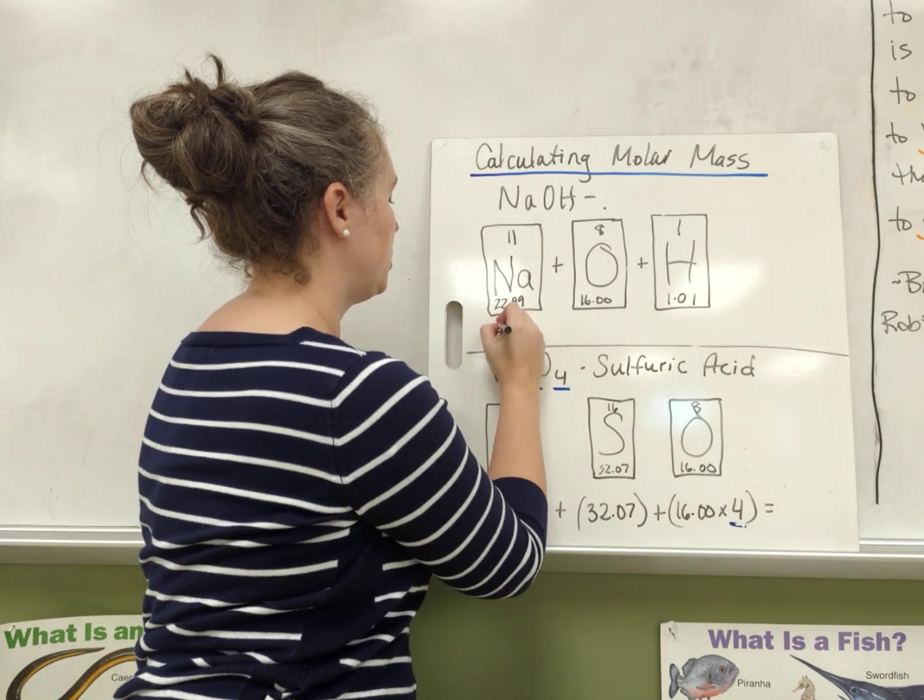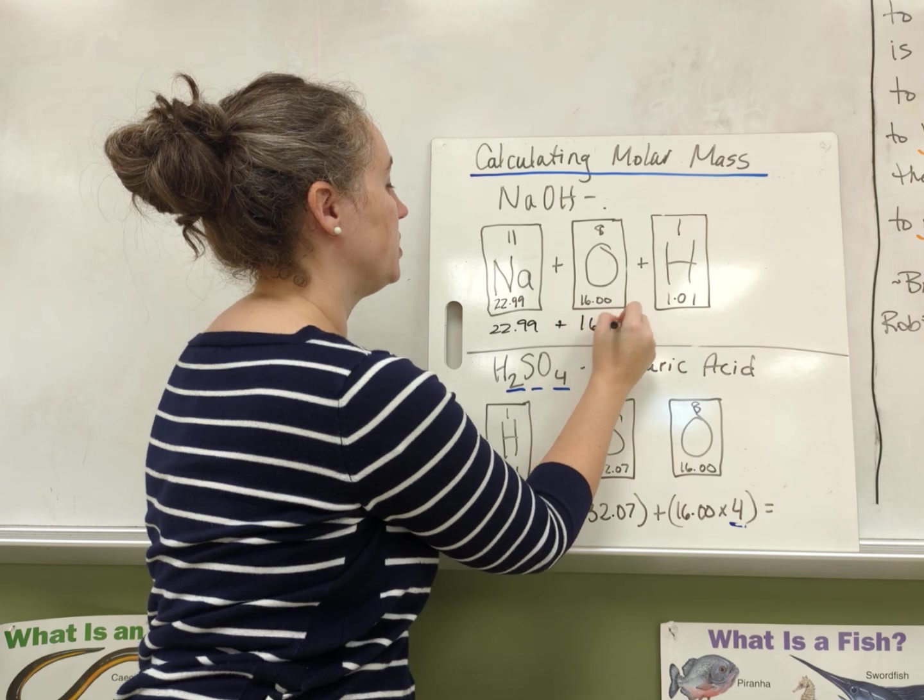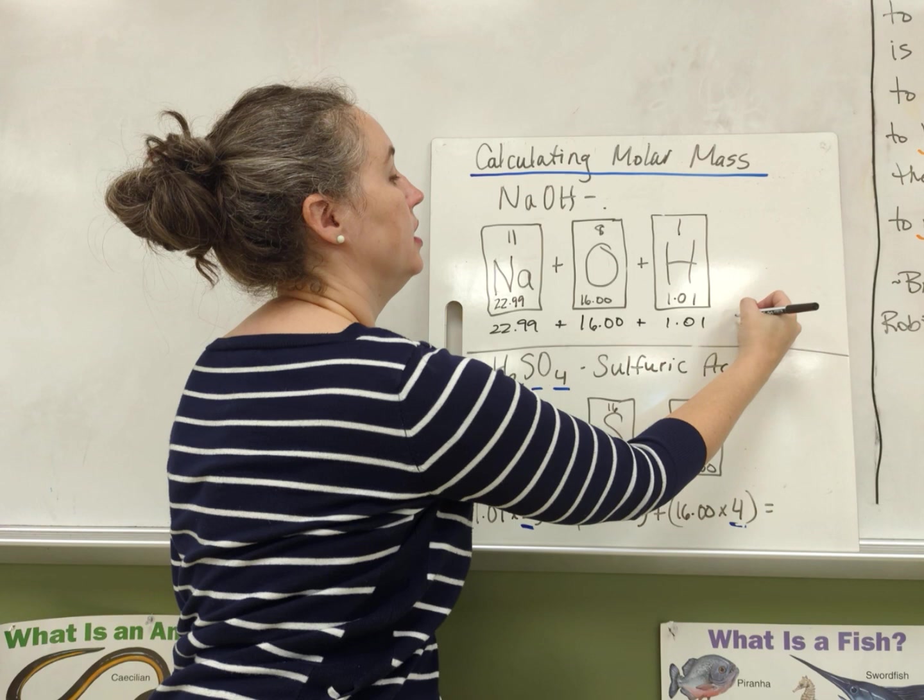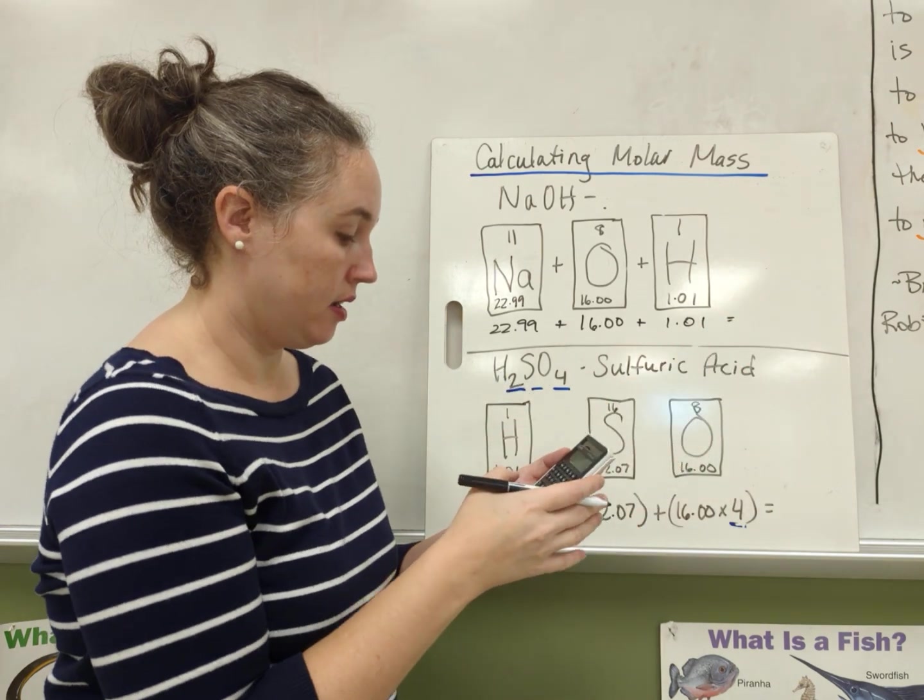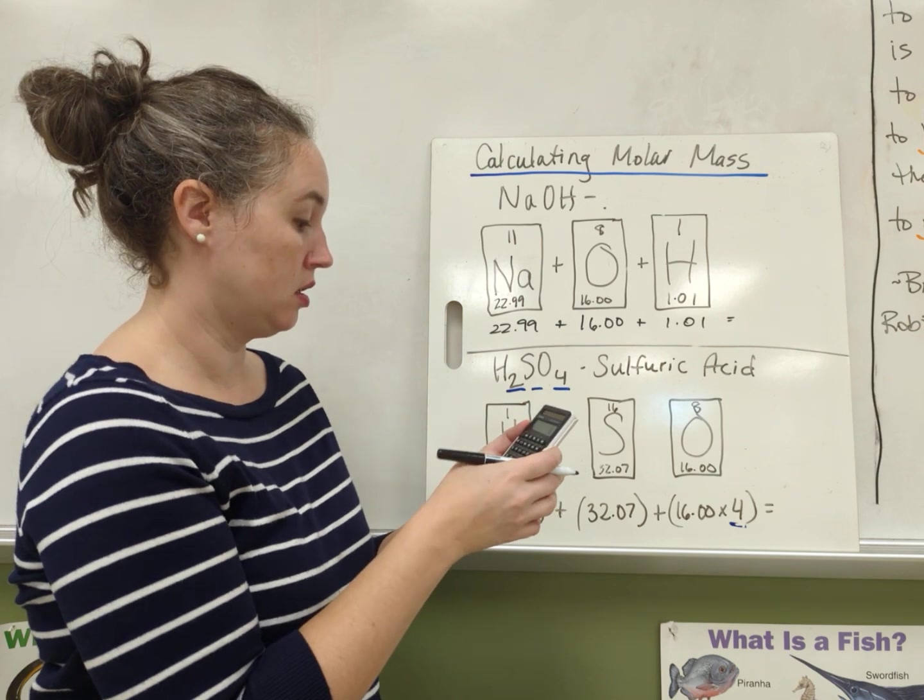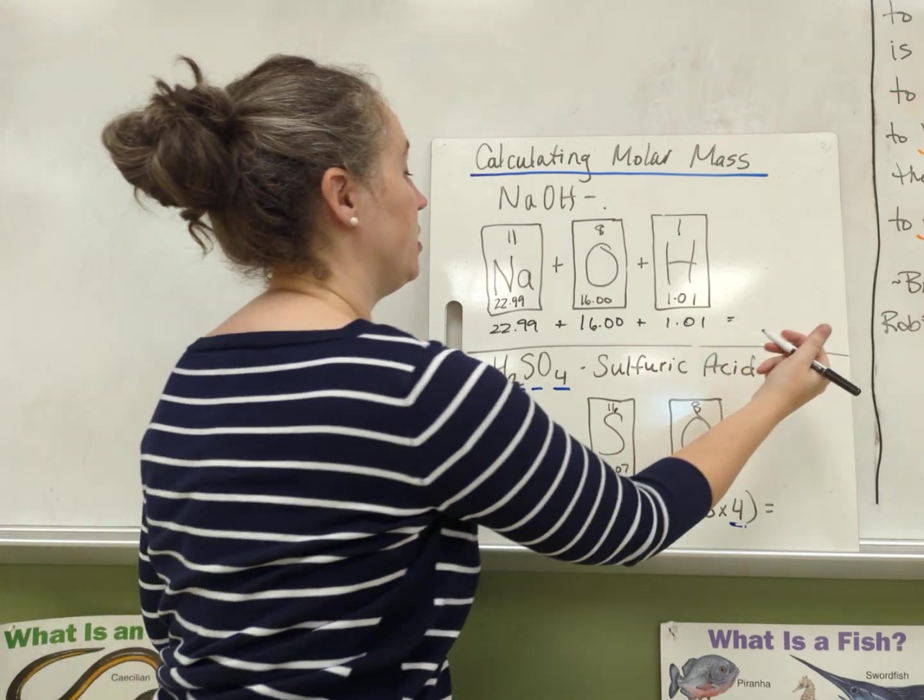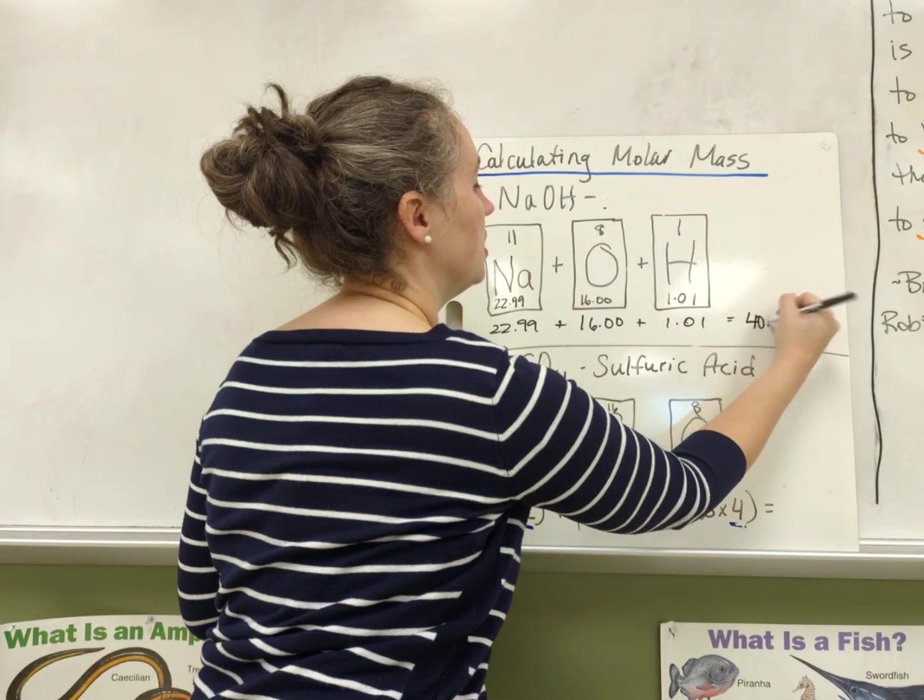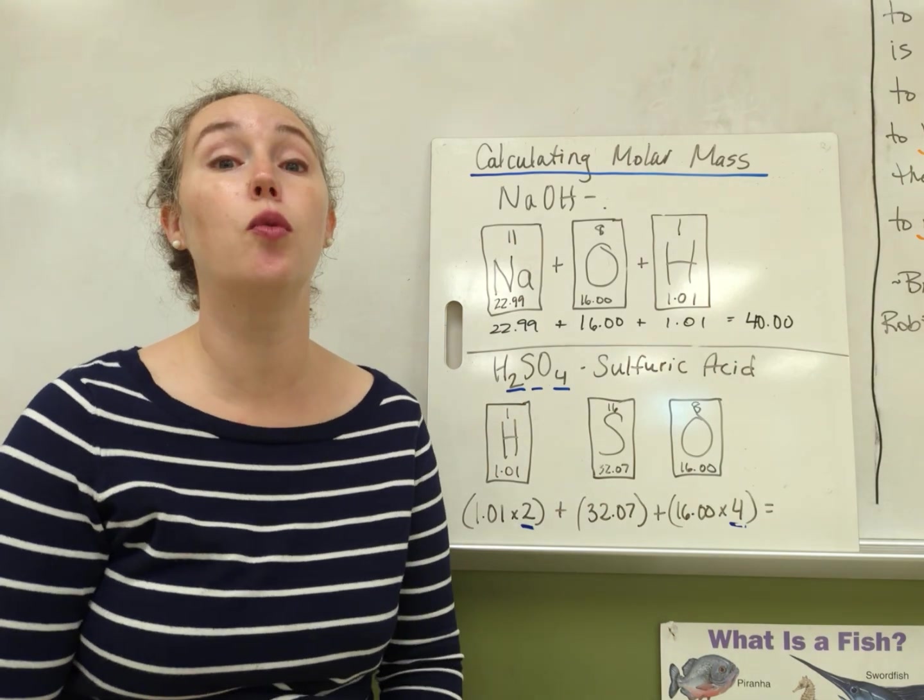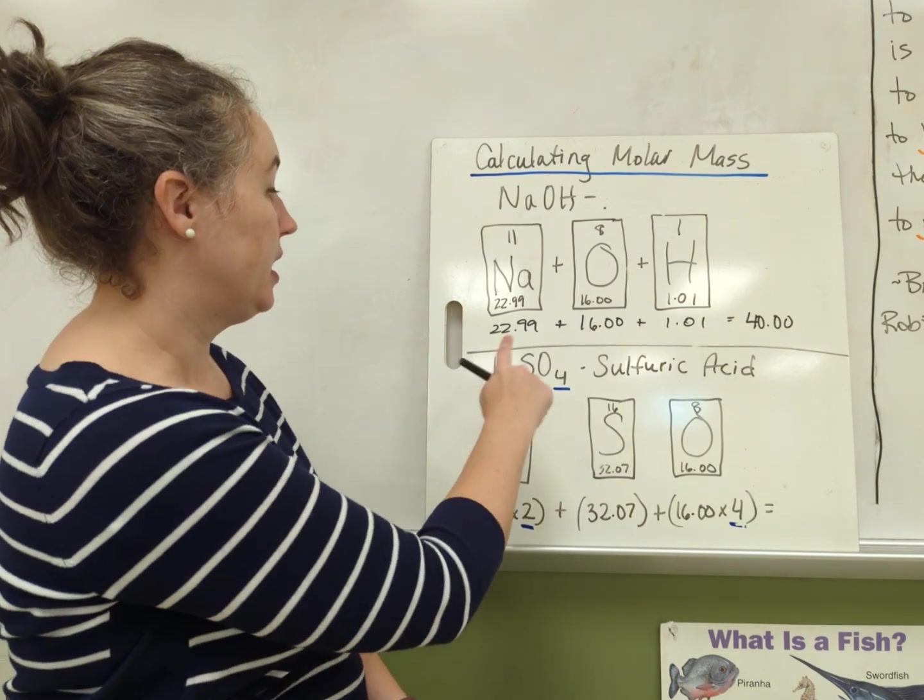So it'll be 22.99 plus 16.00 plus 1.01. Then I'll put this in my calculator. And that equals 40.00. That's the molar mass of one mole of sodium hydroxide.